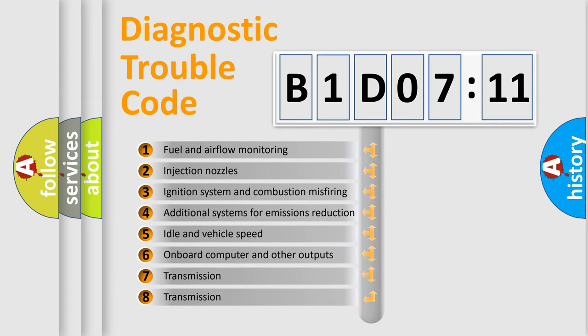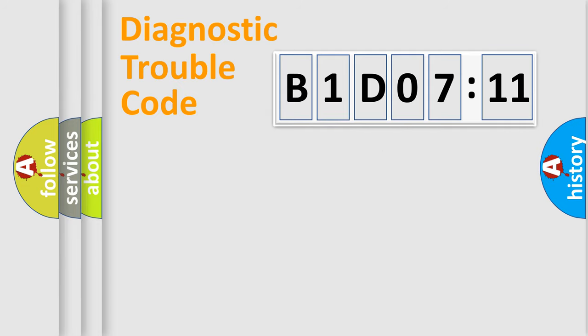The third character specifies a subset of errors. The distribution shown is valid only for the standardized DTC code. Only the last two characters define the specific fault of the group.